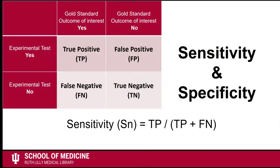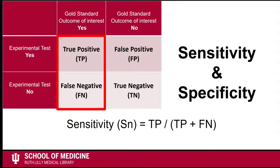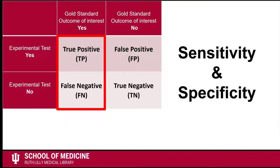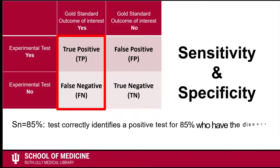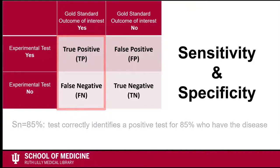Sensitivity, or SN, equals true positives over true positives plus false negatives. In essence, this is the percentage of people who were correctly identified as having the outcome of interest by the experimental test out of all the people who have the outcome of interest. So if a test is 85% sensitive, it means that the test correctly identifies a positive test for 85% of the people who have the disease.